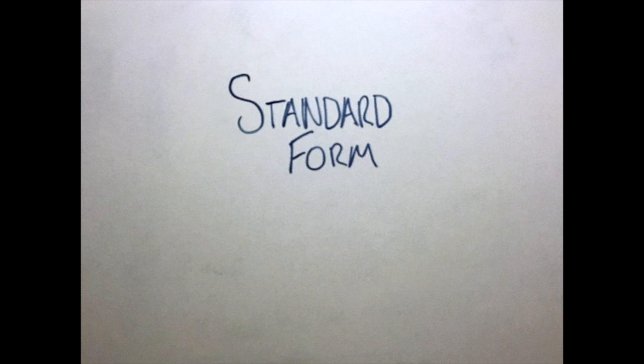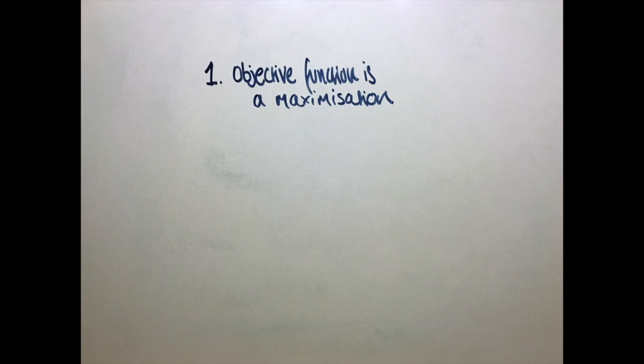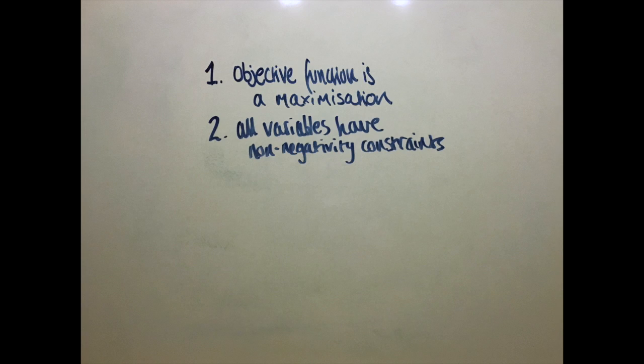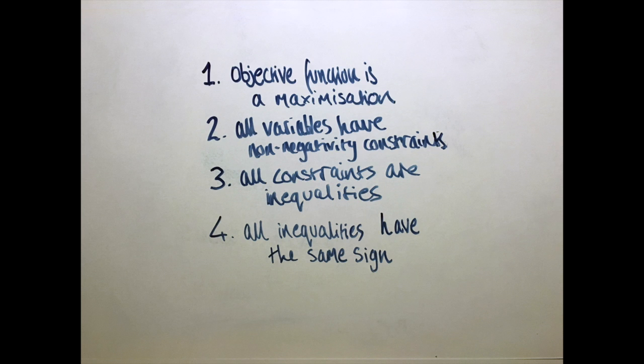Fortunately, we had minimal work to do for this problem because it was already in standard form. Well, what's standard form, you might ask? The standard form for linear programming is when the objective function is a maximization, all variables have non-negativity constraints, all constraints are inequalities, and all inequalities have the same sign.